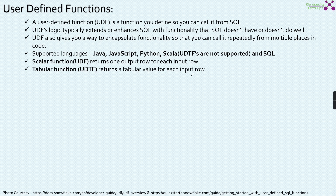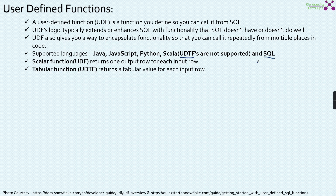The supported languages for user defined functions are Java, JavaScript, Python, Scala — where UDTFs are not supported — and Snowflake scripting in the form of SQL. There are two different user defined functions: the scalar function (UDF) which returns only one output row for each input row, and the UDTF (tabular function) which returns a tabular value for each input row.